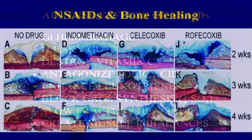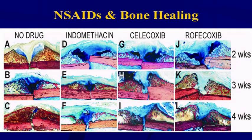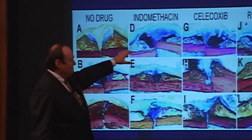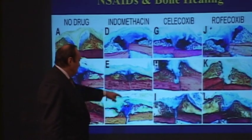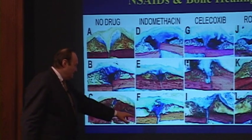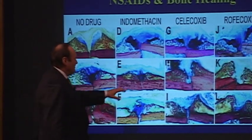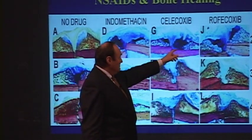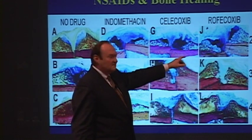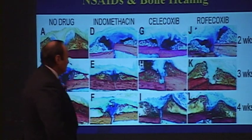Another adverse effect of NSAIDs is slowing fracture healing. Slides from Phil Maffetone show effects of NSAIDs on bone healing. Normal bone healing on the left shows progressive fusion at two, three, and four weeks. With indomethacin, healing is nowhere near as complete. With celecoxib (Celebrex) or rofecoxib (Vioxx), there is clear disruption of bone healing at two, three, and four weeks. Anyone with a fracture should not be taking these drugs, yet that's exactly what people do to reduce pain.